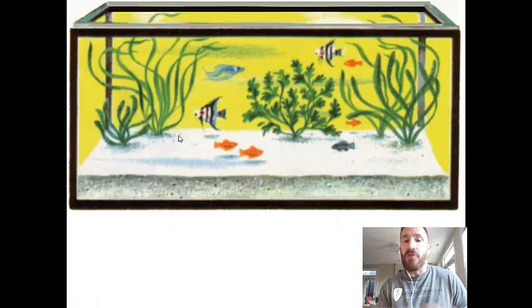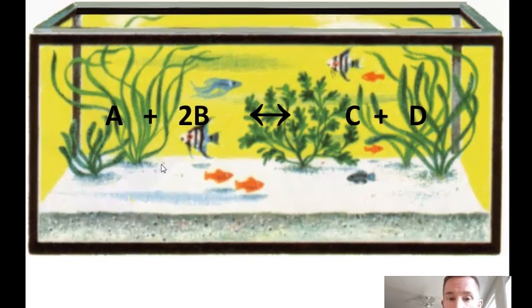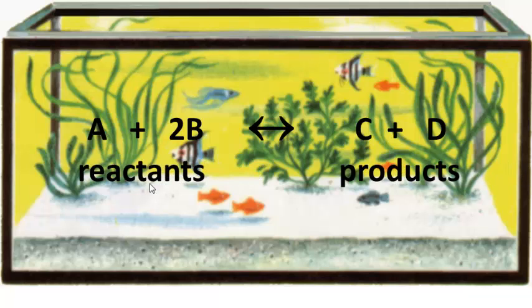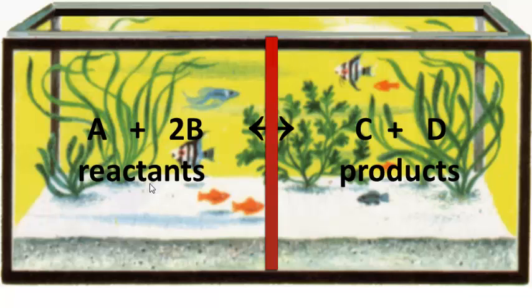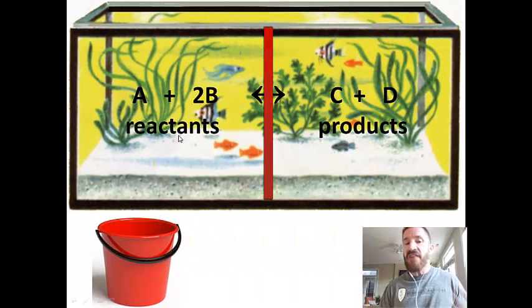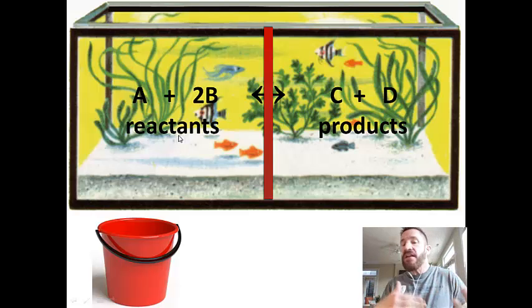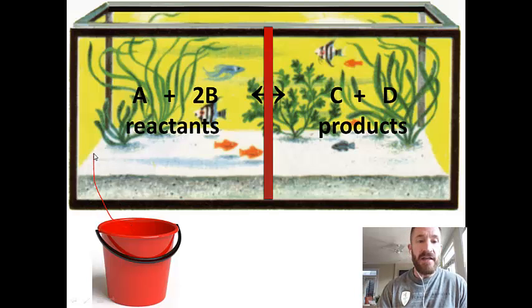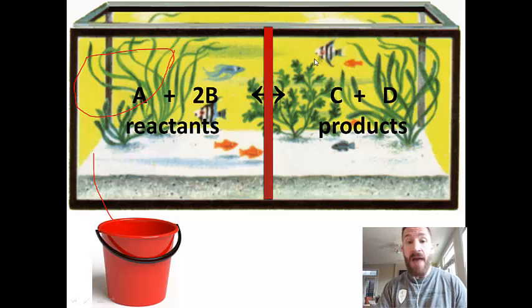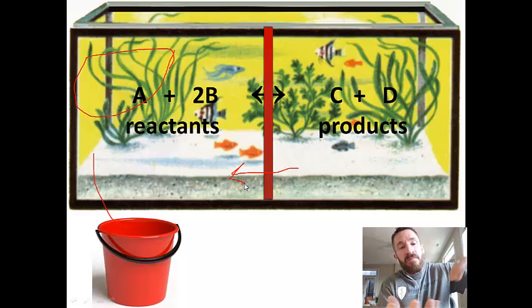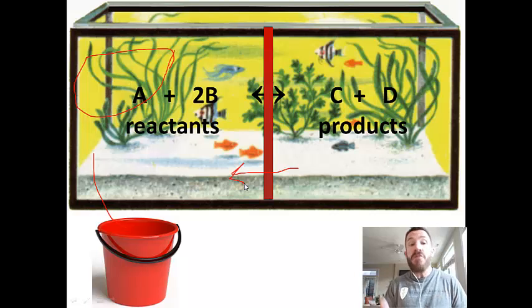Here's another way to think about equilibrium and concentration stresses. Imagine an aquarium with a mesh barrier in the middle, allowing water to flow freely left and right. You have a bucket and can pour in or take out any of the reactants or products. If you took out a large amount of water on the reactant side — say A — the system shifts to the left to make up for the A that was lost. This helps you think about which way the reaction will shift.